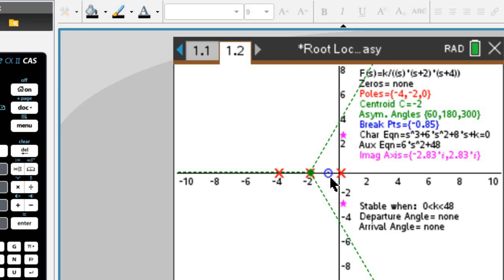And then you can see the zeros, which are none here right now, but the poles are the red axes. In green, you can find the centroid here, which was at negative 2, and the three asymptotes at angles 60, 180, and 300.